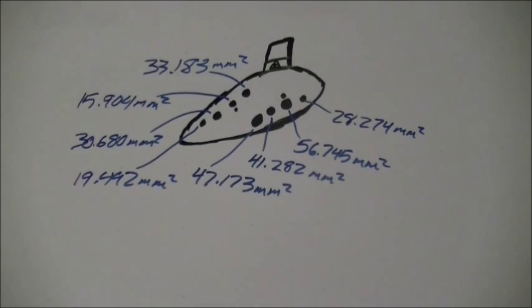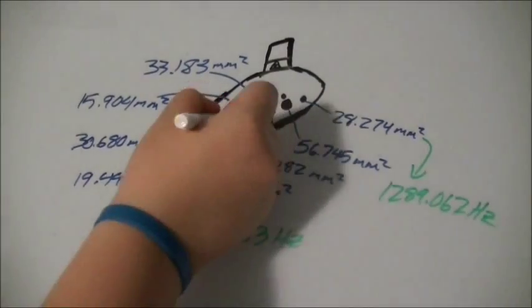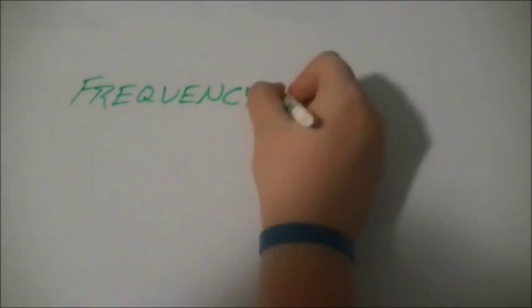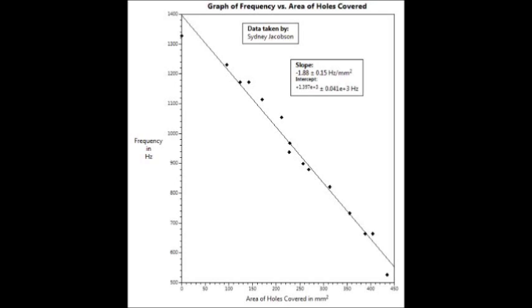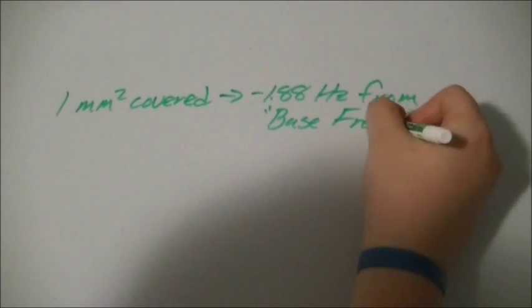Once that was out of the way, I tested out the different frequencies that each hole produced, along with a large variety of hole combinations. I graphed those results with the purpose of finding out if the frequency was proportional to the area of holes covered, and it turns out they have a nice linear relationship. From that, I was able to conclude that for every square millimeter covered, 1.88 Hz was lost from the base frequency.